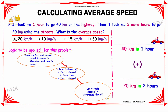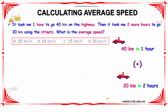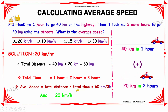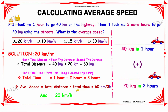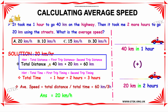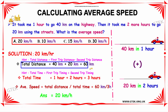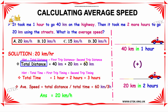Let us see the solution for this problem. Since the total distance equals the first trip distance plus the second trip distance, the total distance equals 40 km plus 20 km, which is equal to 60 km. Therefore, the total distance is 60 km.